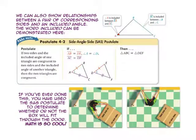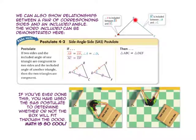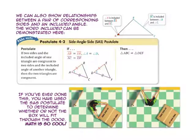We can also show relationships between a pair of corresponding sides and an included angle. Notice that angle A is included between side BA and side AC, and side BC is included between angle B and angle C. For the side-angle-side postulate, we will be working with an included angle. If two sides and the included angle of one triangle are congruent to two sides and the included angle of another triangle, then the two triangles are congruent. Notice that side AB is congruent to side DE, included angle A is congruent to angle D, and side AC is congruent to side DF.